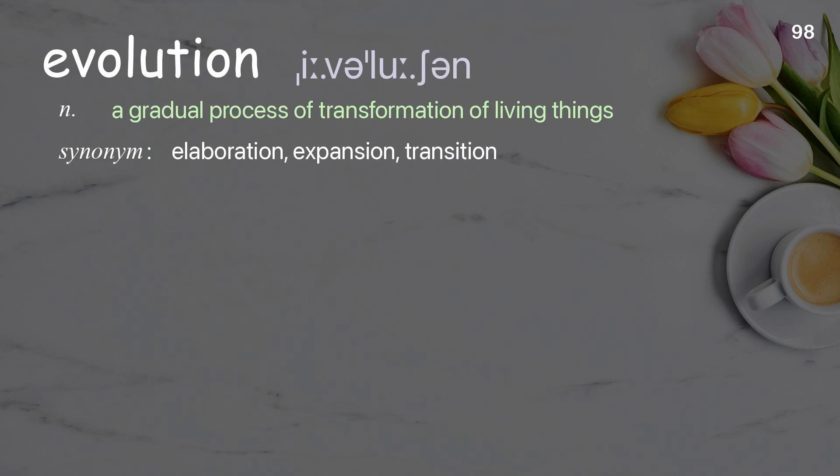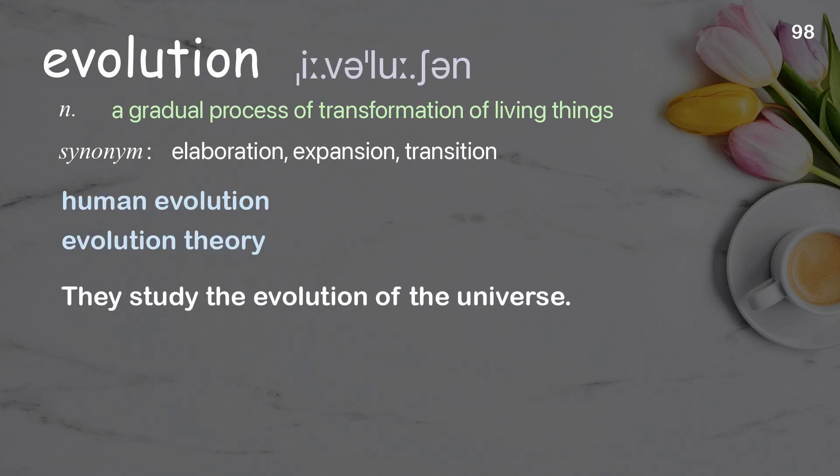Evolution: a gradual process of transformation of living things. Examples: human evolution; evolution theory. They study the evolution of the universe.